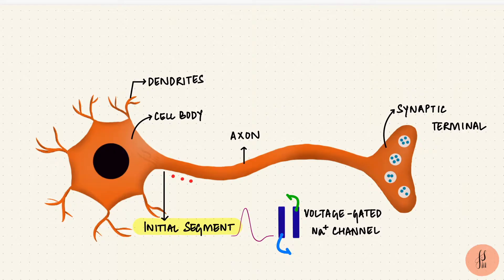Just the generation of an action potential isn't enough, it has to reach the terminal end of the neuron. How it reaches there is by propagation.